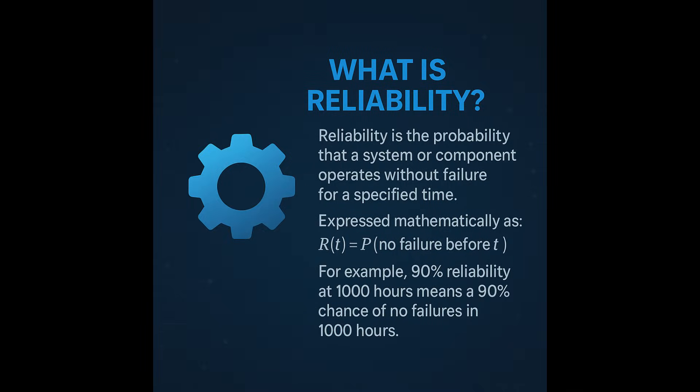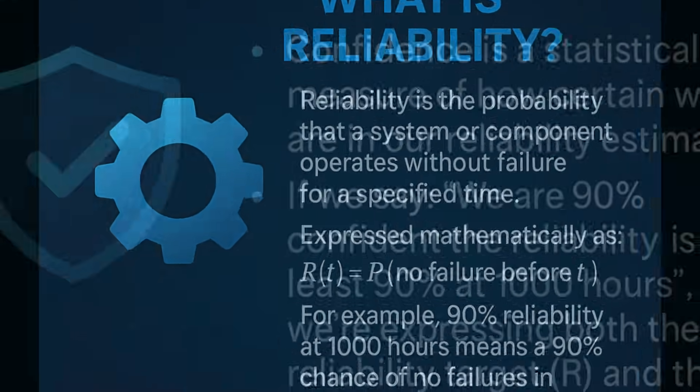So, what is reliability? Reliability is the probability that a system or component performs its intended function without failure under stated conditions for a specified period of time. It's mathematically expressed as R(t) = P(no failure before time t). For example, if a system has a reliability of 90% at 1,000 hours, it means there is a 90% chance the system will operate for 1,000 hours without failure.